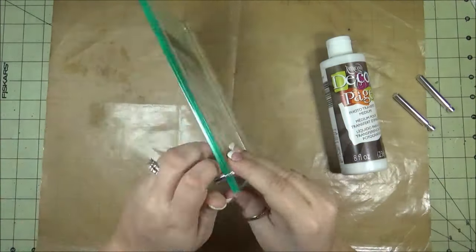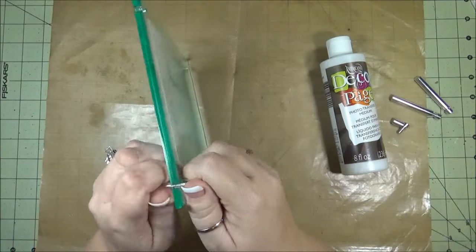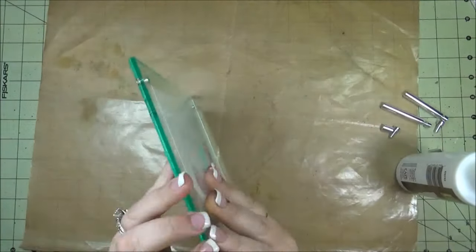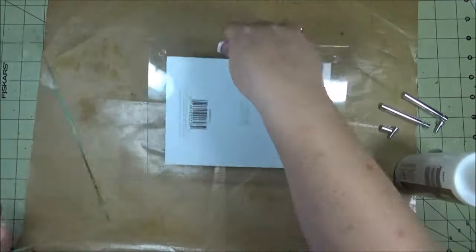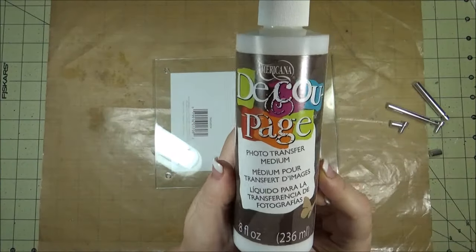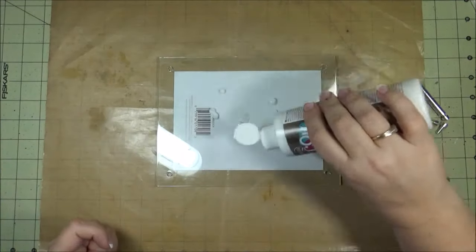As you can see, first I removed the pegs that go onto the frame. They just screw in and hold it together. Then using some Americana DecoPage from DecoArt.